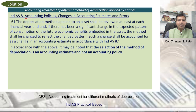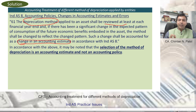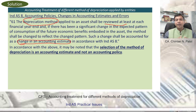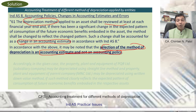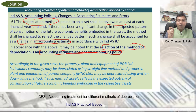Let us look at Ind AS 8. Under Ind AS 8, the depreciation method applied to an asset shall be reviewed at least at each financial year end. If there is a change in depreciation method, it shall be accounted for as a change in accounting estimate. Depreciation is essentially an estimation of the pattern of consumption of the property, plant and equipment. Therefore, the selection of a depreciation method is an accounting estimate, not an accounting policy.